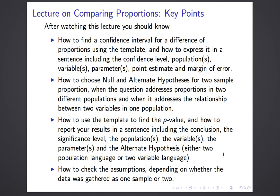After watching this lecture, you should know how to find a confidence interval for the difference of proportions using the template and express it in a sentence including confidence level, populations, variables, and parameters. You should know how to choose null and alternate hypotheses for two-sample proportions — whether the question addresses proportions in two populations or a relationship between two variables in one population. You should know how to use the template to find the p-value, how to report results in a sentence, and how to check the assumptions depending on whether data was gathered as one sample or two.